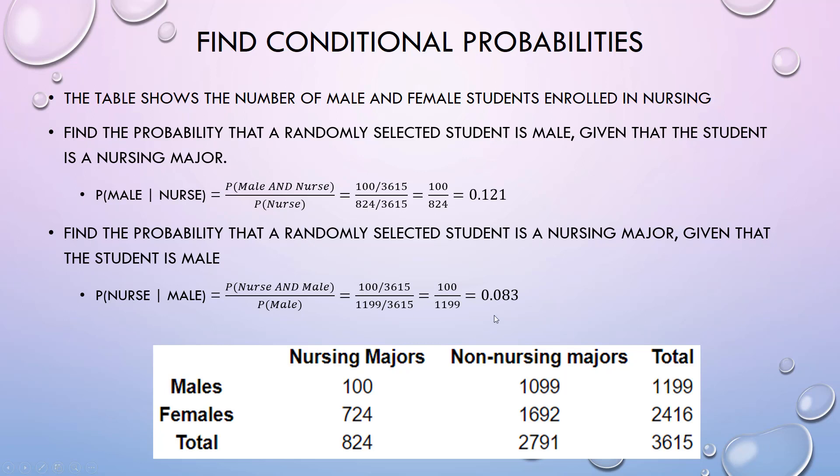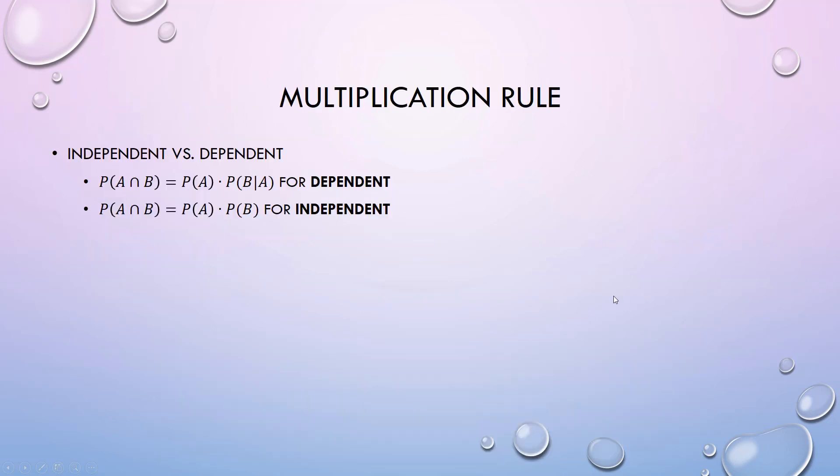For the multiplication rule, the important part is to know if the events are independent or dependent, because if they're dependent then the probability of the second event occurring depends on the fact that the first event already occurred.